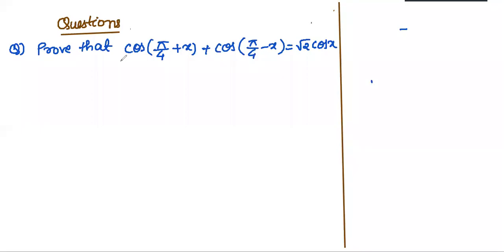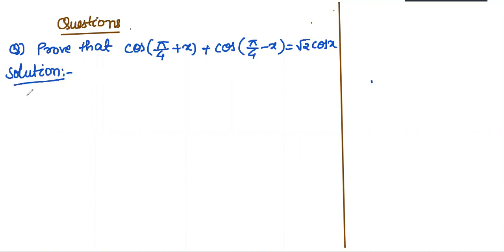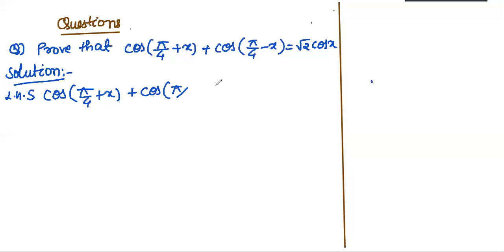Now we'll discuss some more questions. The question is: prove that cos(π/4 + x) + cos(π/4 - x) = √2 cos x. In proving, we have to show that the left hand side equals the right hand side. So I am going to start with the left hand side, which is cos(π/4 + x) + cos(π/4 - x).